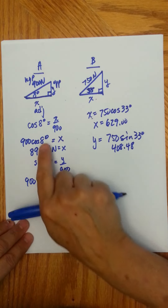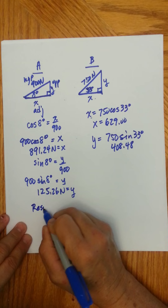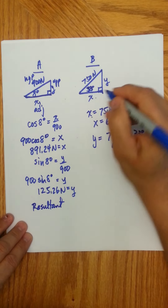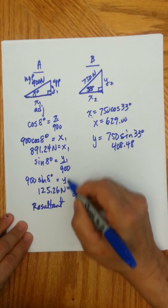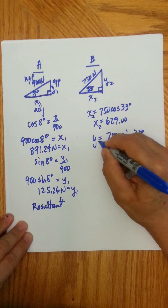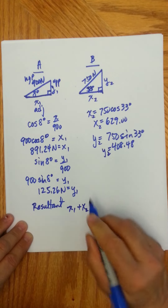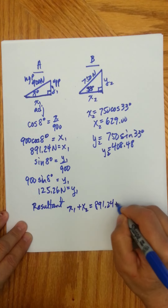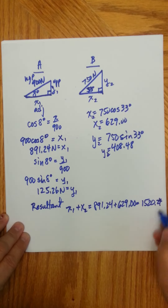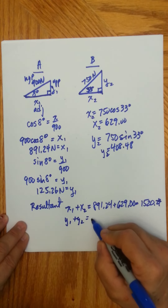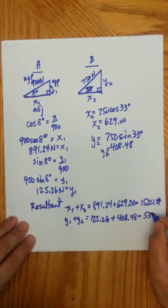So now you add the x's together and the y's together. x1 plus x2 is 891.24 plus 629, giving 1520.24. And y1 plus y2 is 125.26 plus 408.48, for a total of 533.74.